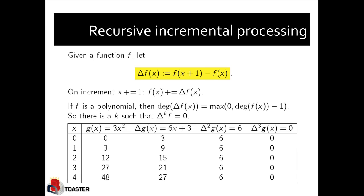Now if we want to increment x by 1, going from 0 to 1, all we have to do is take the sum of each value and the value just above it. So 0 plus 3 gives g of x equals 3; delta g of x becomes 3 plus 6 equals 9; and delta squared remains 6 plus 0 equals 6. Incrementing again to 2: 3 plus 9 is 12; 9 plus 6 is 15; 6 remains 6. Going from 2 to 3: 12 plus 15 is 27; 15 plus 6 is 21; 6 remains 6. Going to 4 gives 48, 27, and 6.